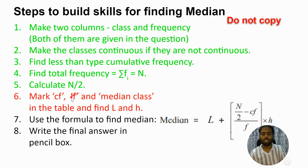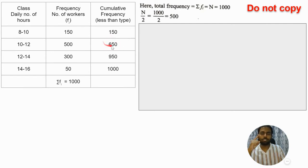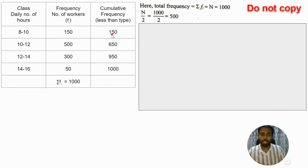Step six: mark cf (cumulative frequency), f (frequency), and median class in the table, then find capital L (lower class limit of median class) and h (height of the class). Keep n/2 = 500 in your mind and look at the cumulative frequency column. Is 150 smaller than 500? Yes — move ahead. Is 650 larger than 500? Yes — so the frequency to its left is your f, the class to its left is your median class, and the cumulative frequency above it is your cf.